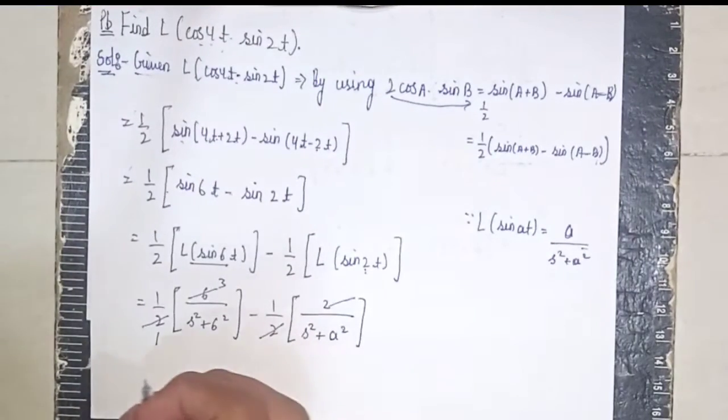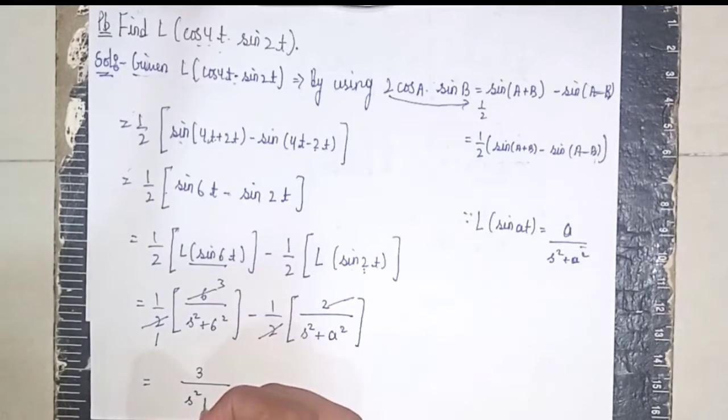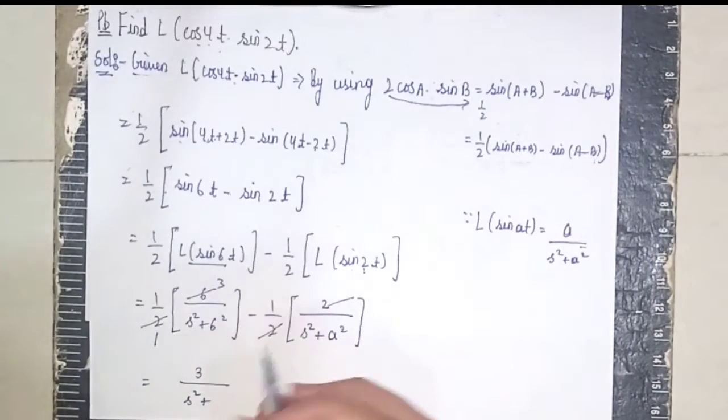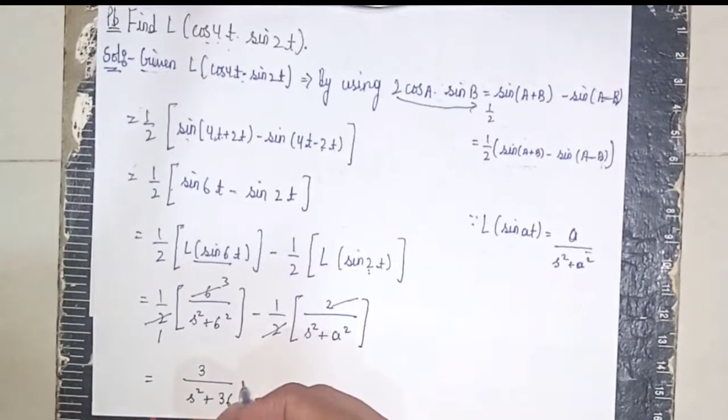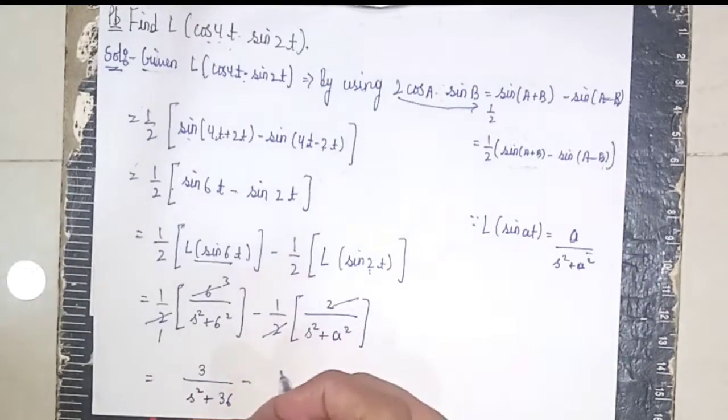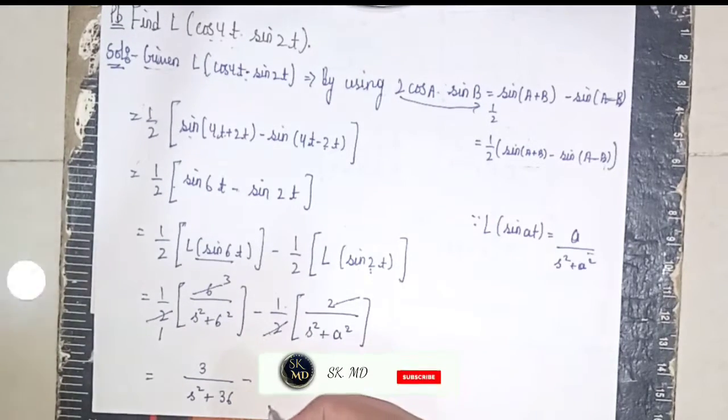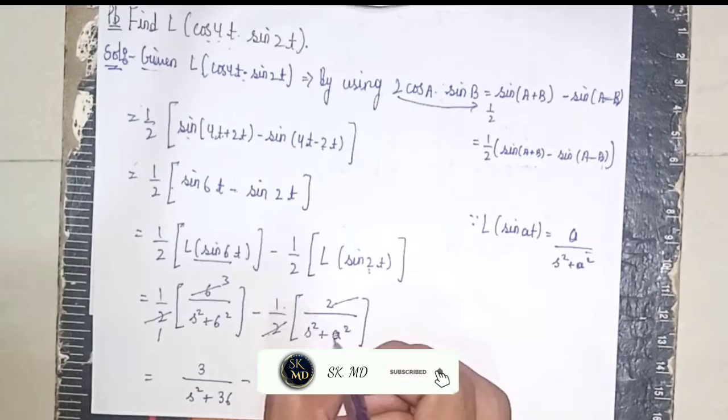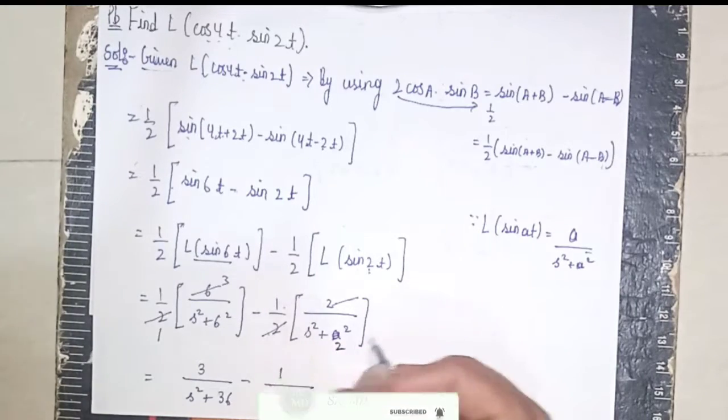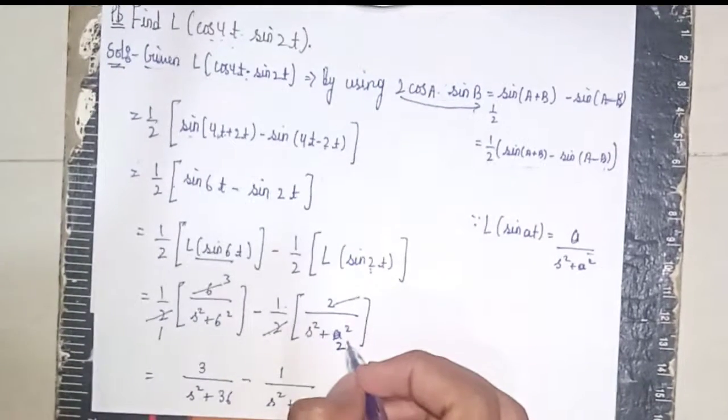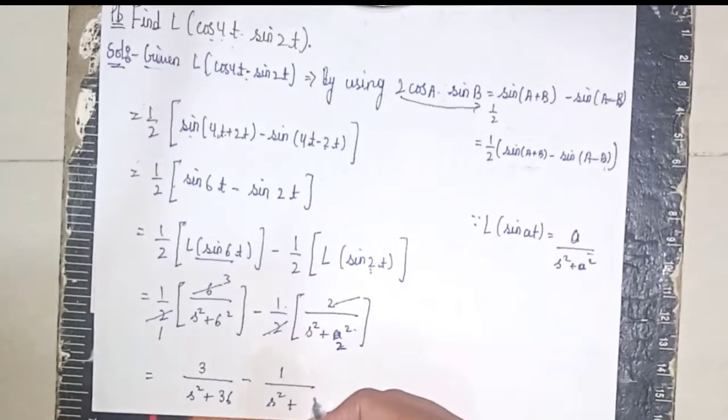So our answer is 3 by (s squared plus 36) minus 1 by (s squared plus 4). 6 squared is 36, and 2 squared is 4. This is our answer, this is our solution.